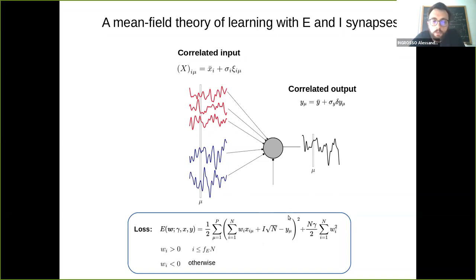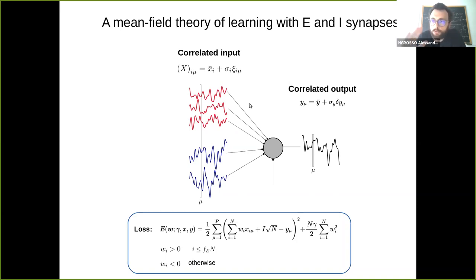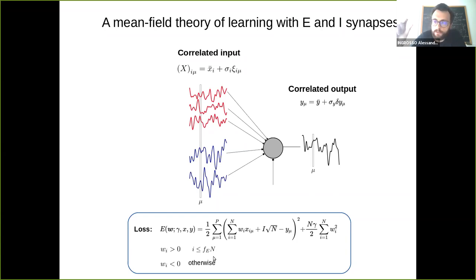We want the processed input to be very close to the prescribed output. The constraint is that these inputs come from excitatory fibers, so those weights must be positive, while the blue ones come from inhibitory fibers and are multiplied by negative synapses. So w_i > 0 for i less than f·N, where f represents the ratio of excitatory to inhibitory fibers, and the remaining weights are negative.